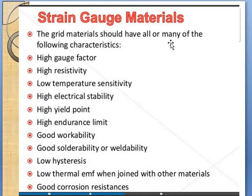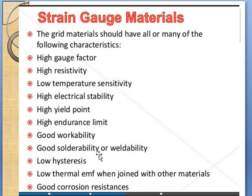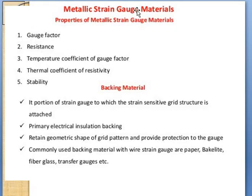The grid material of the strain gauge should have: high gauge factor, high resistivity, low temperature sensitivity, high electrical stability, high yield point, high endurance limit, good workability, solderability or weldability, low hysteresis, low thermal EMF when joined with other materials, and good corrosion resistance.